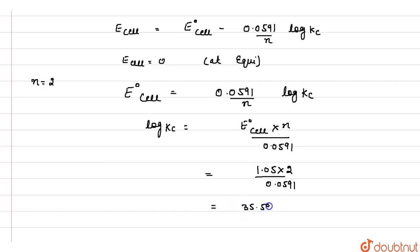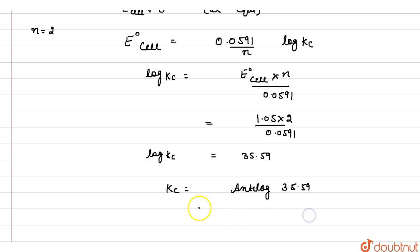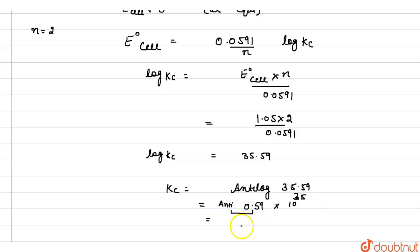To find out the value of Kc, Kc equals antilog of 35.59. That means it will be equals to 10 raised to power 35.59, which is antilog of 0.59 into 10 raised to power 35. The antilog of 0.59 is 3.92, so Kc equals 3.92 into 10 raised to power 35. This is the value of Kc.